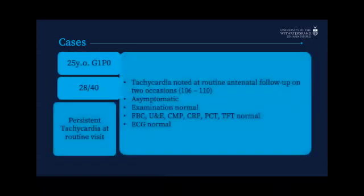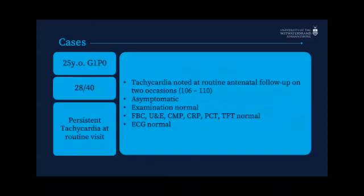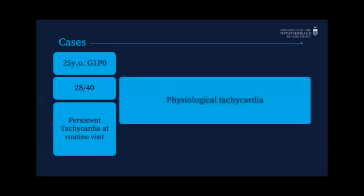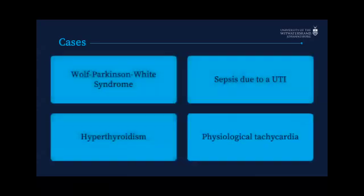Case four had tachycardia noted at two routine follow-up visits, heart rate around 106 to 110, but was completely asymptomatic. Exam was normal, all bloods were normal, and her ECG was normal. After much debate and assessment, she was considered to have a physiological tachycardia of pregnancy. So four different cases, four very different causes of tachycardia.